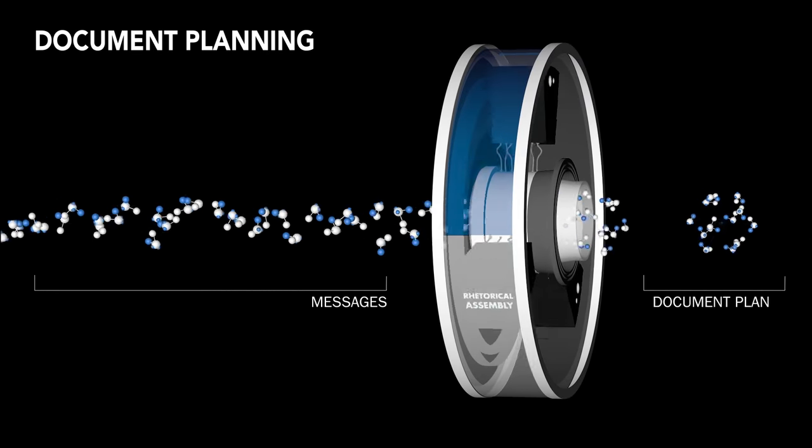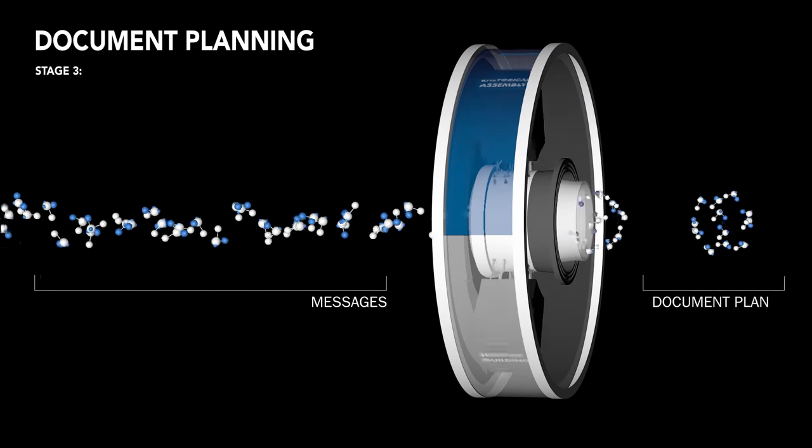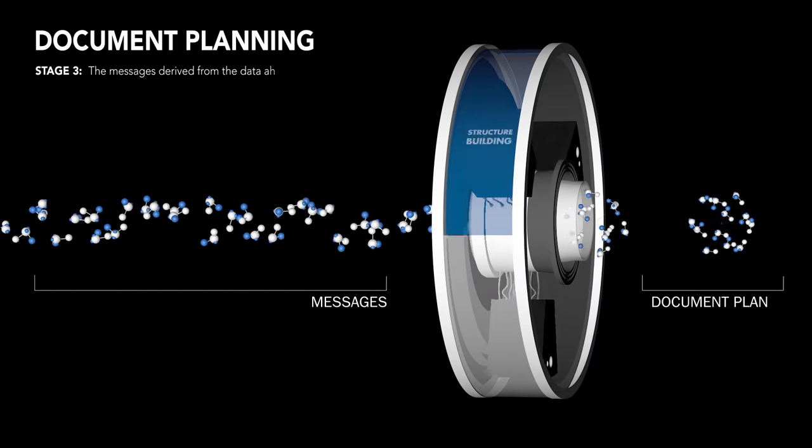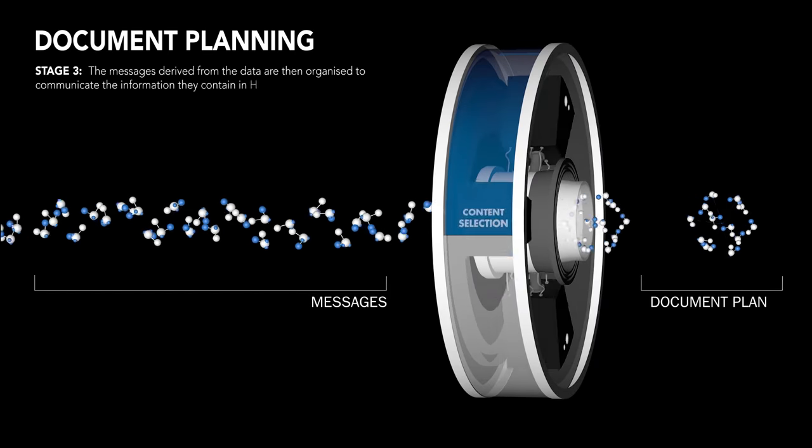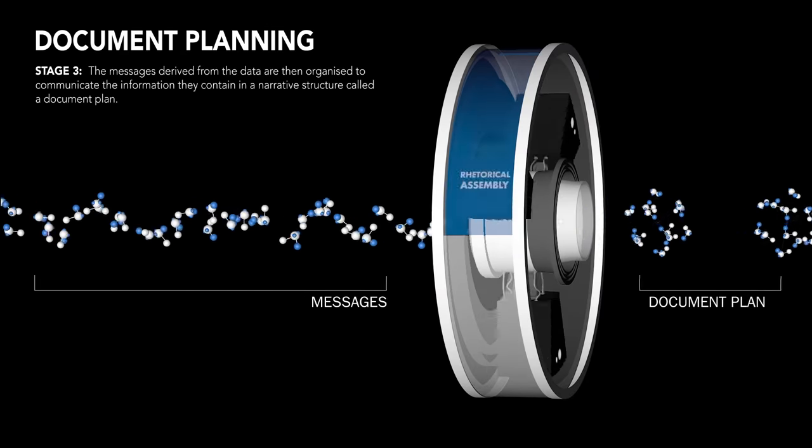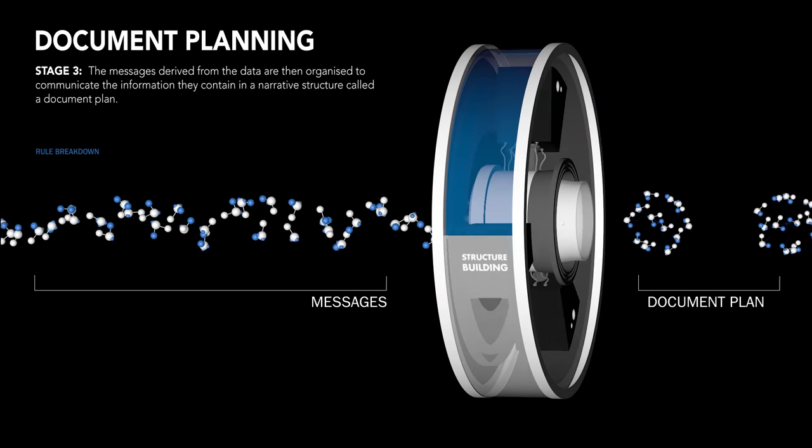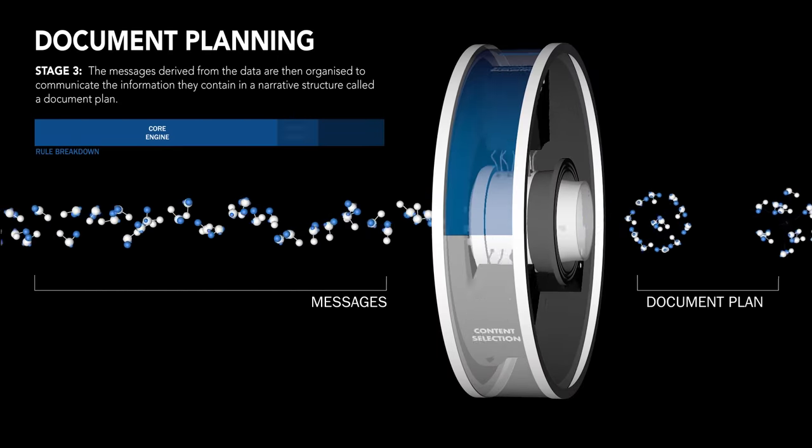After the data and its meaning are extracted, the NLG platform enters a phase of communication. Document plans allow the engine to select the right content for the intended user, to assemble the meaning from the data in the right order, and adhere to the correct structure of the finished report.